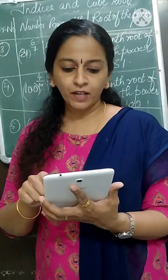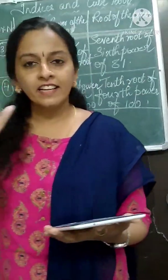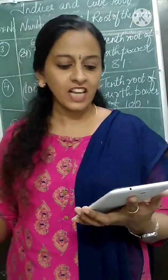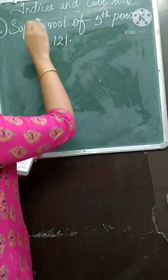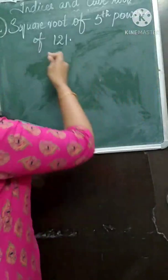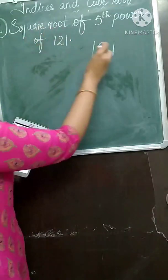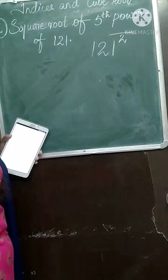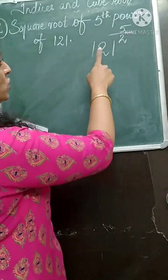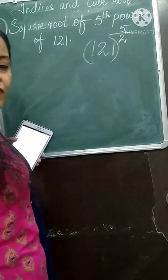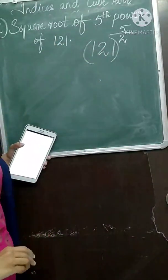Now the second part of Practice 3.2: write the following numbers in the form of rational indices. Square root of 5th power of 121 — root means 2 is the denominator, power means 5 is the numerator. So you write 121 raised to 5 upon 2.